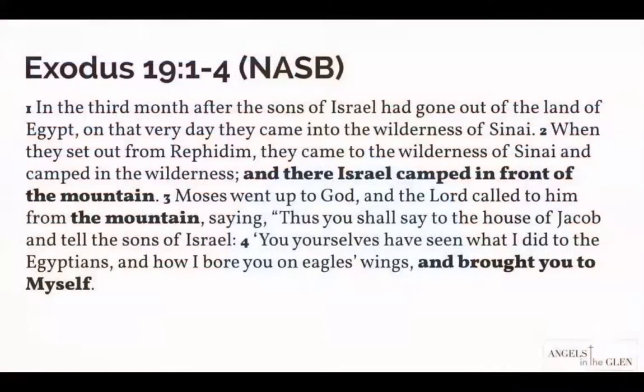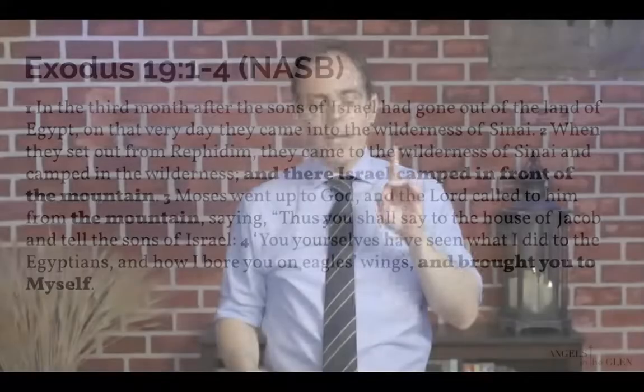In Exodus 19 verses 1 through 4, verse 4 says, 'You yourselves have seen what I did to the Egyptians and how I bore you on eagle's wings and brought you to myself.' God is a personal God — he's bringing them to his holy mountain, to himself.